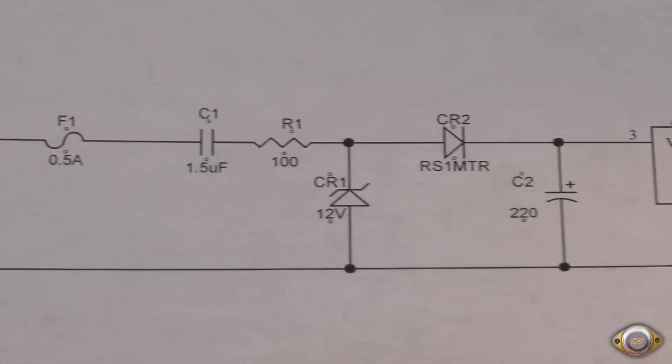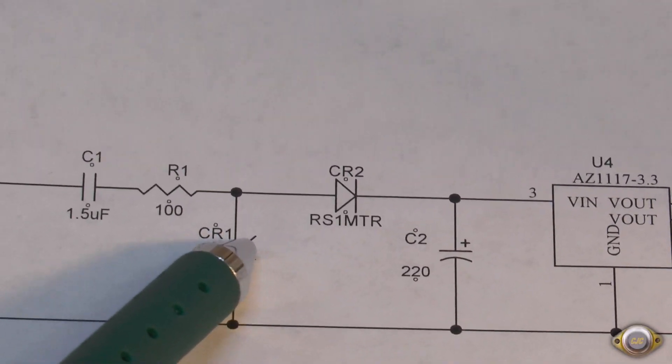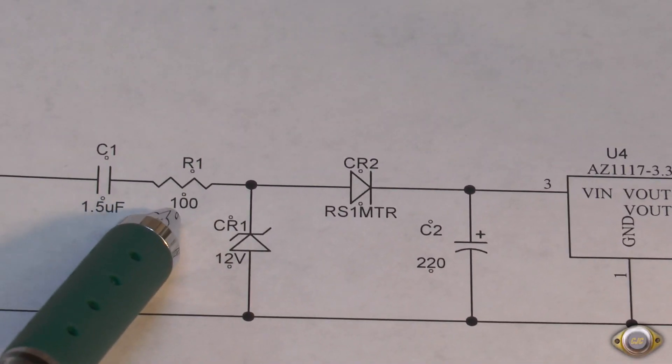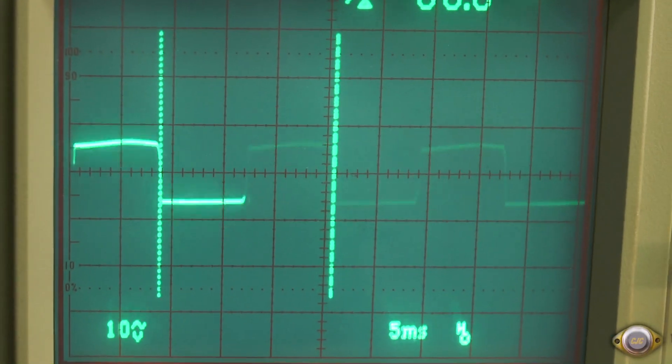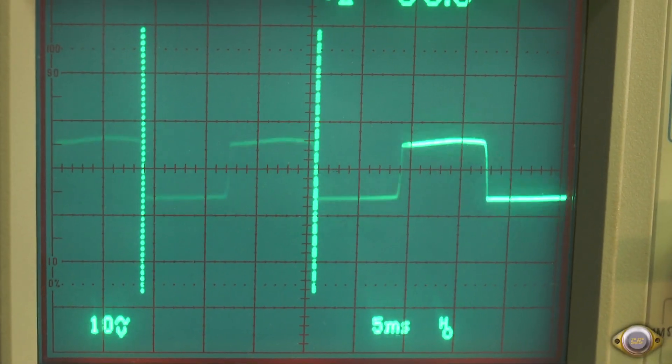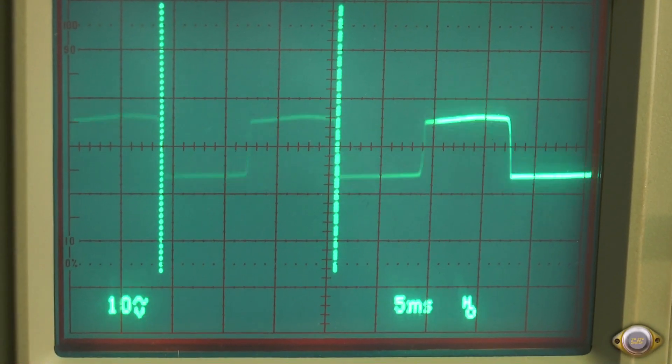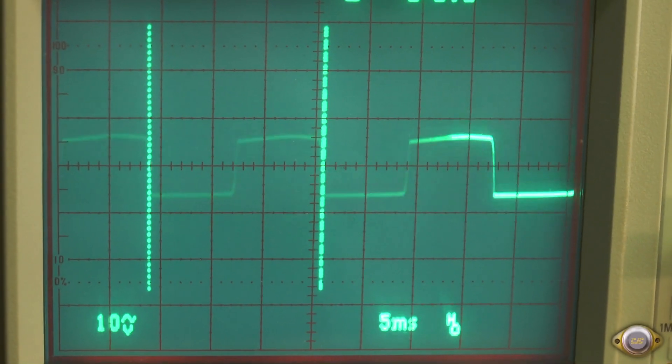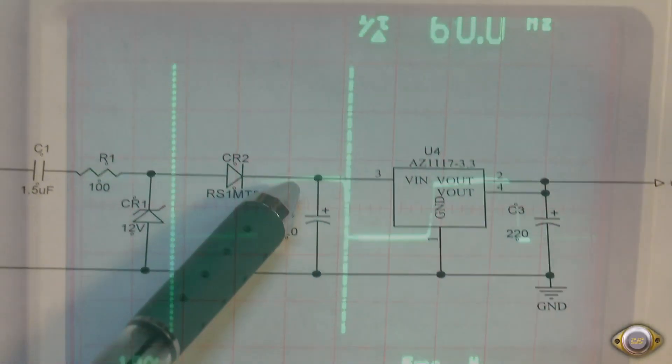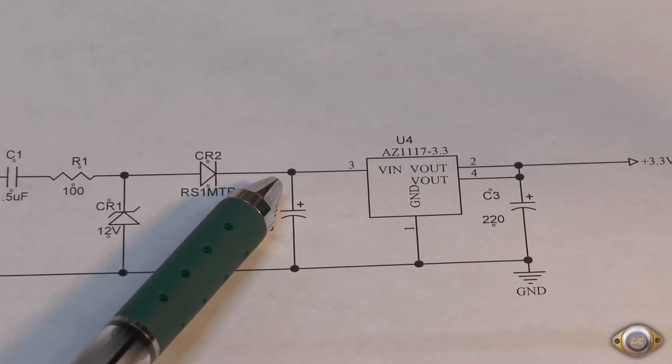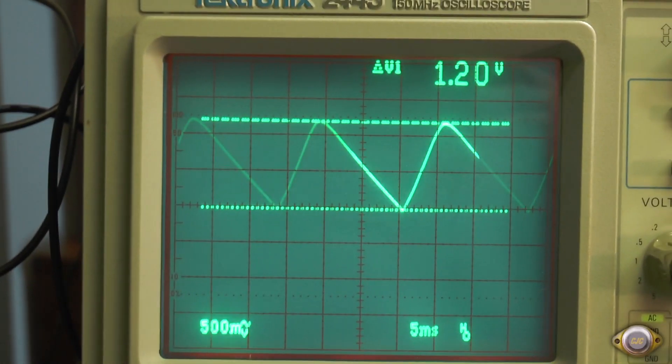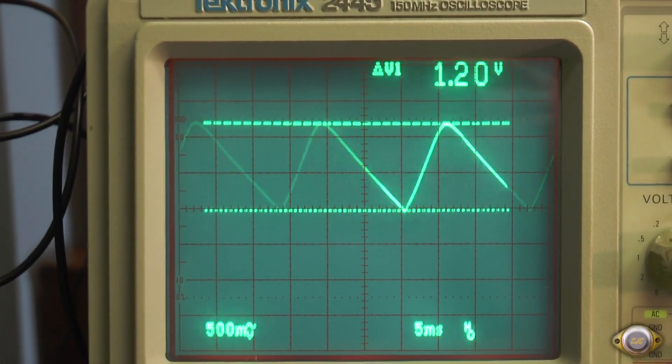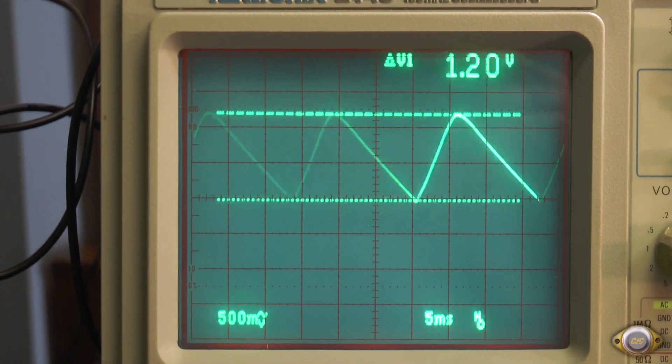I'm going to take a look at some of the waveforms. Right now I've got the scope right here after the 100 ohm resistor. The scope shows a square wave of 12 volts. So that would be the zener voltage clamping the AC down coming in through the capacitor. Now I'm going to look at this point here at the filter cap to see what the ripple is. We've got about 1.2 volts of ripple there at the capacitor.